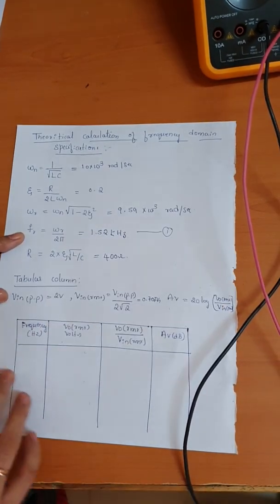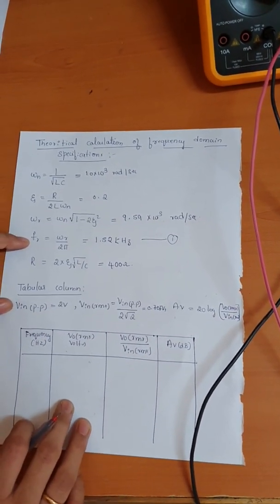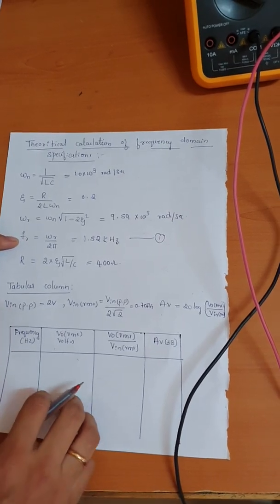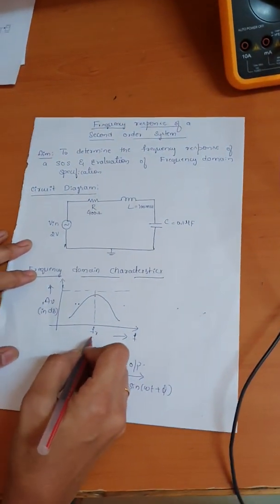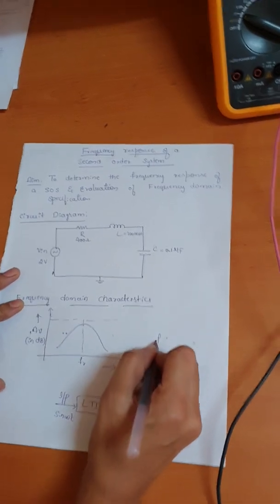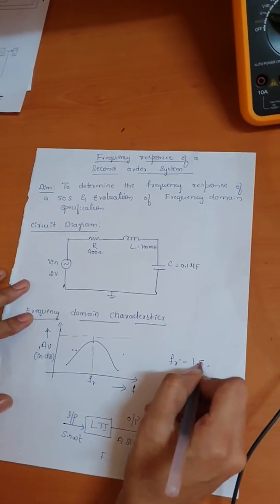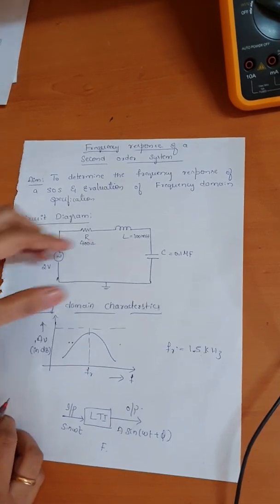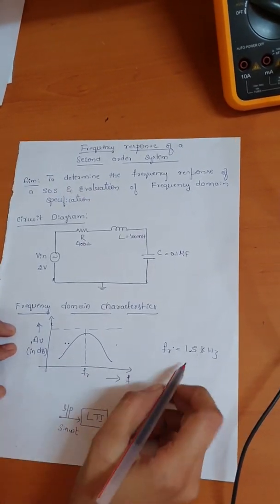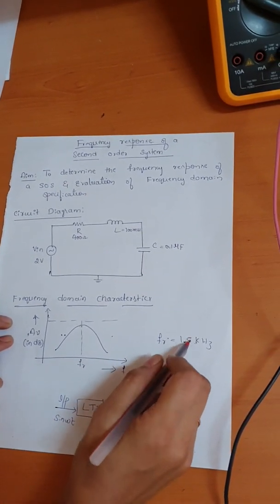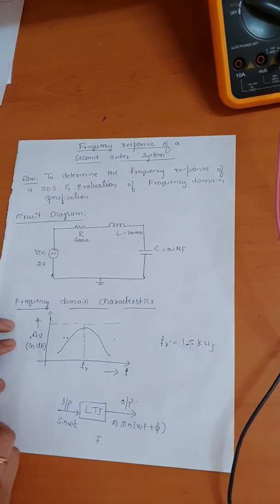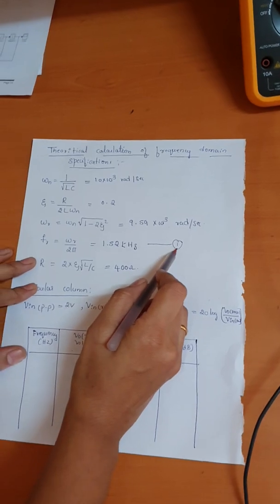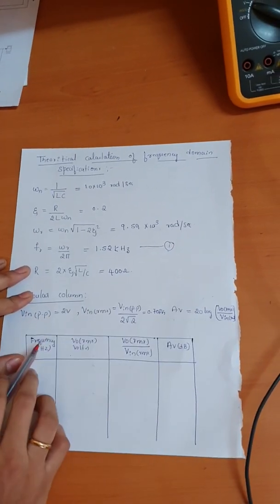One thing to observe: we are going to consider this resonant frequency as equation one. In our practical conduction, we need to prove that at this particular frequency — equal to 1.5 kilohertz — we get maximum voltage across the capacitor. So at this frequency only we need to obtain maximum voltage across the capacitor. Consider this as your theoretical equation.